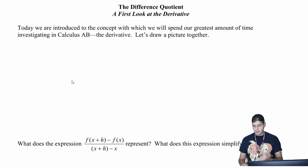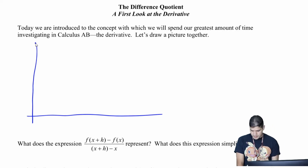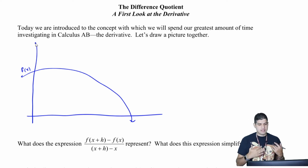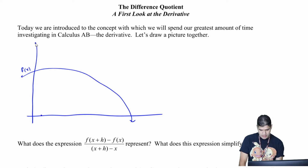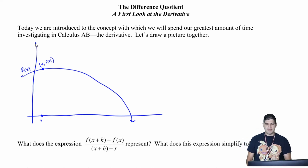Today we're going to look at this concept and we're going to draw a picture together — a very simple graph. I'm going to draw my function, something like that. So this is going to be my function f of x. I'm going to put down an x value right there, and then my y value, the coordinate corresponding to that — so this is x — then this would be the point x comma f of x. Whatever my x value is, substitute it into my function and I'll be good to go.